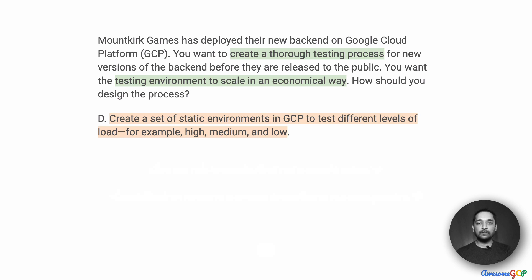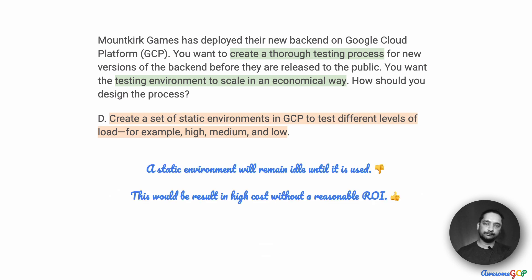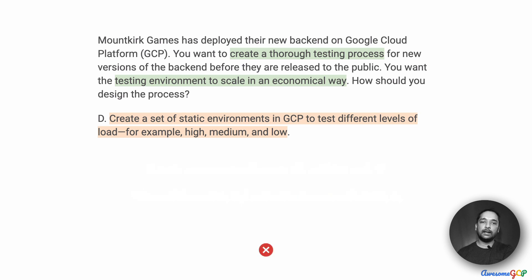Option D suggests that we create a set of static environments in GCP to test different levels of load — for example, high, medium, and low. So there would be a project or setup just for low stress testing, one for medium, and another for high load testing. A static environment will remain idle until the time you actually start doing those tests, which means you've kept all this capacity ready but aren't using it all the time. Especially for heavy load testing, which only happens occasionally, all this provisioned capacity is lying idle and wasting money. This would result in high cost without a reasonable return, so option D is eliminated.